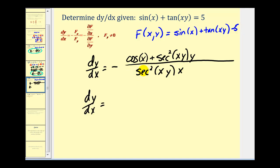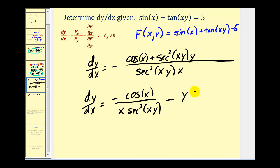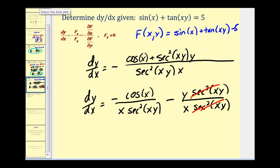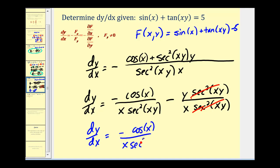Simplifying, the first part of the numerator gives -cos(x) / (x · sec²(xy)). Be careful with the negative sign — the entire fraction is negative, so the second part becomes minus y · sec²(xy) / (x · sec²(xy)), which simplifies to -y/x. So the final derivative is -cos(x) / (x · sec²(xy)) - y/x.